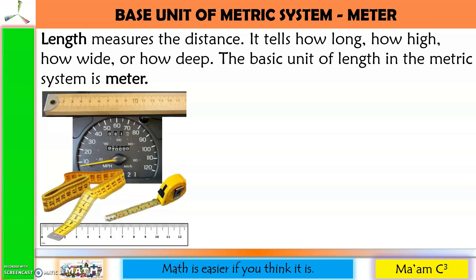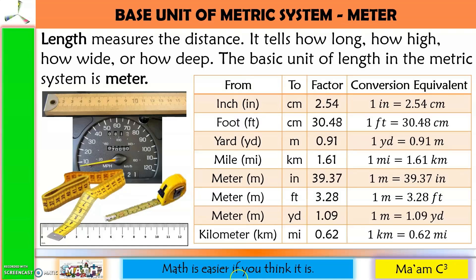We can also convert metric system to English system and vice versa. Here are the common conversions: 1 inch equals 2.54 centimeters; 1 foot equals 30.48 centimeters; 1 yard equals 0.91 meters; 1 mile equals 1.61 kilometers; 1 meter equals 39.37 inches, also 3.28 feet and 1.09 yards; and 1 kilometer equals 0.62 miles.